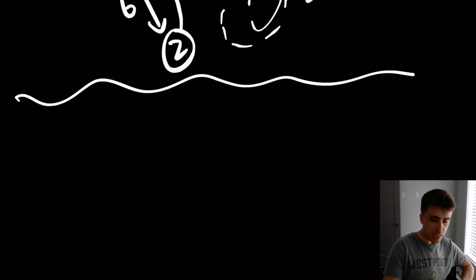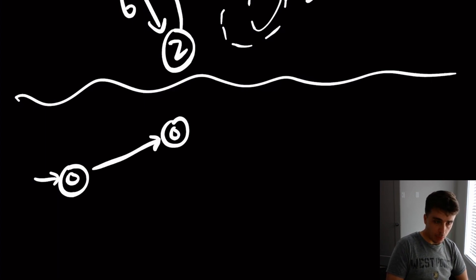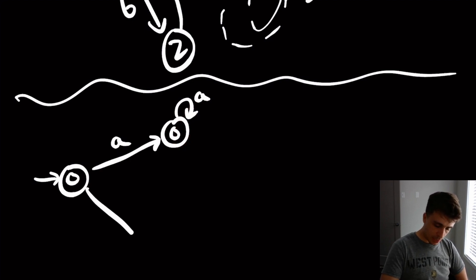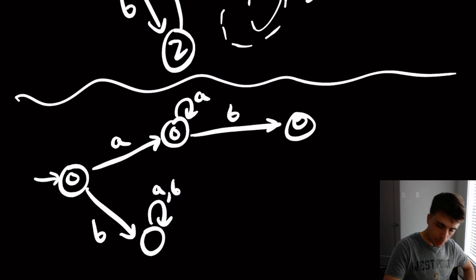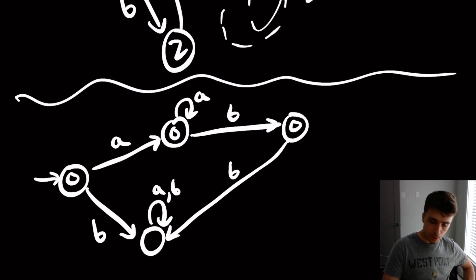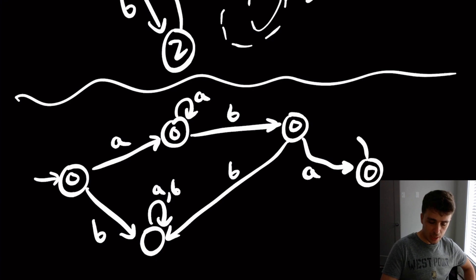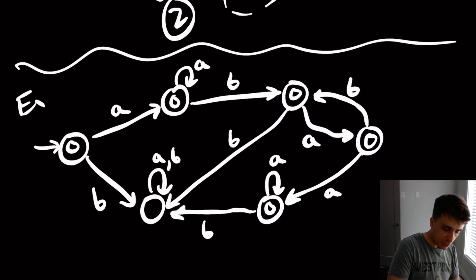Here is example two. This machine has even more states. There's a start state with a self-loop on A, a B transition going out to a dead state that self-loops on everything. There's a final state that goes down on input B, another state that goes on input A to a final state, an input B transition, input A going to another state, a loop on A, and a B transition going elsewhere.